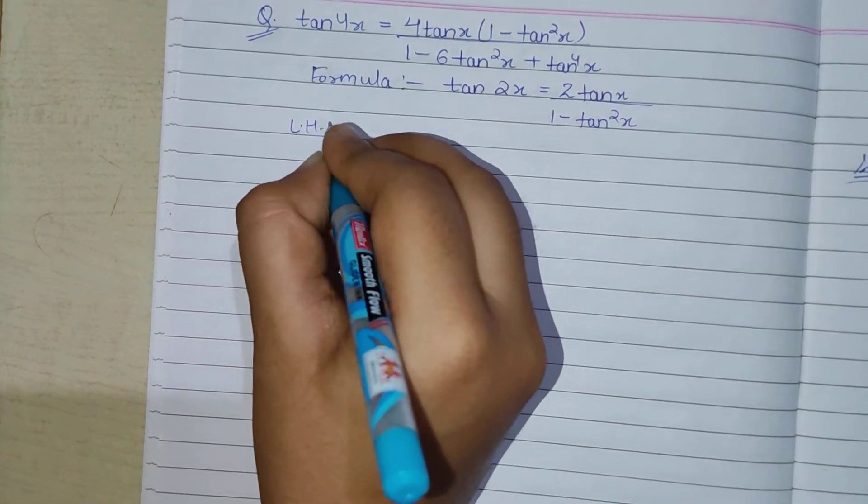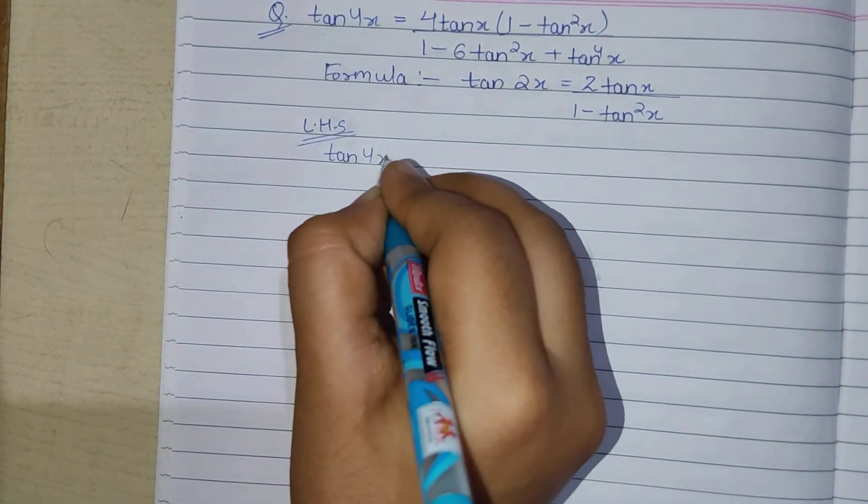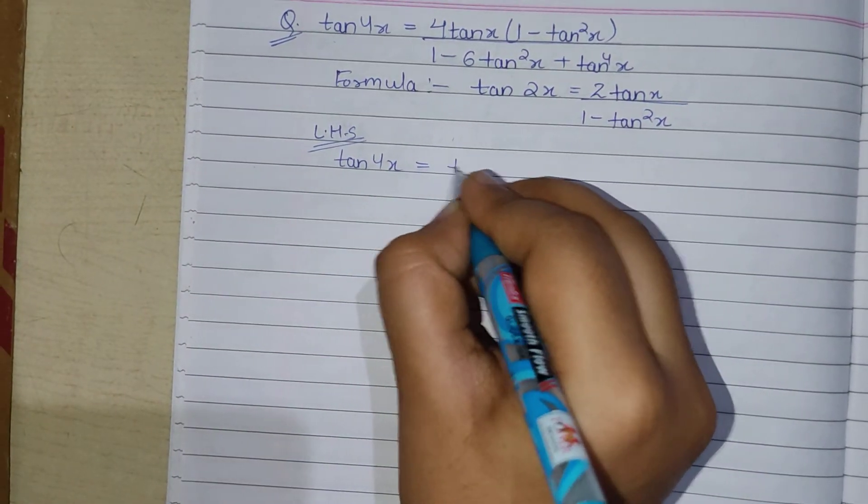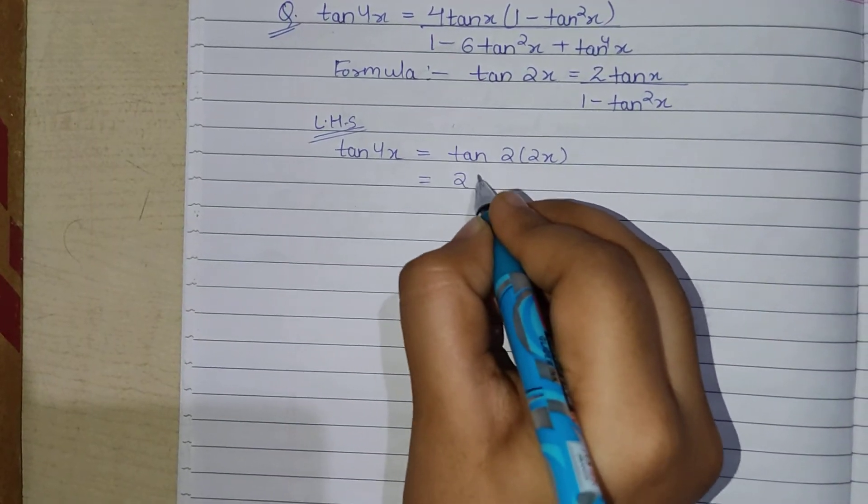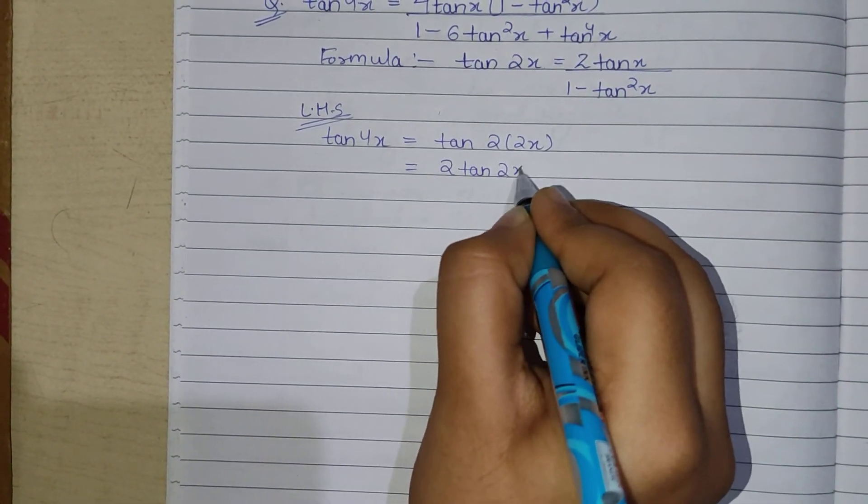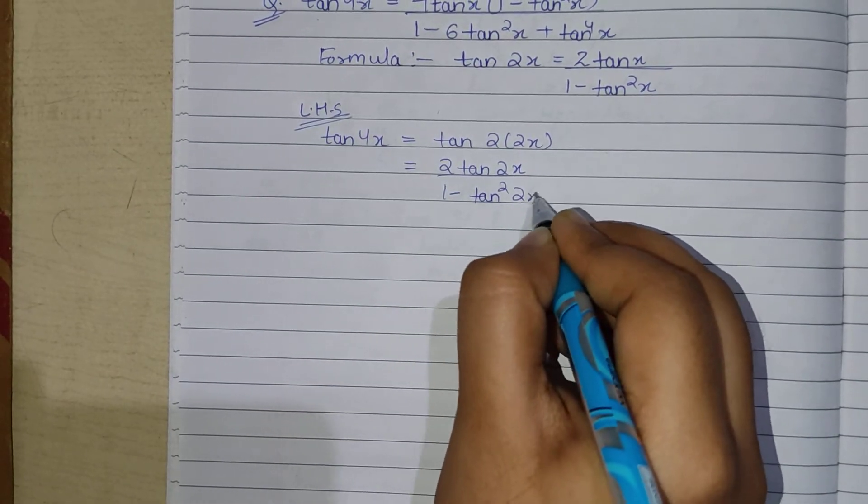In the LHS side, we are having tan 4x. tan 4x can be written like tan 2 into 2x, which equals 2 tan 2x upon 1 minus tan square 2x.